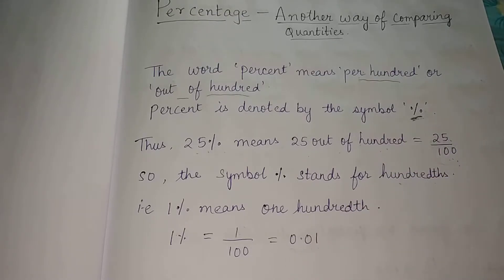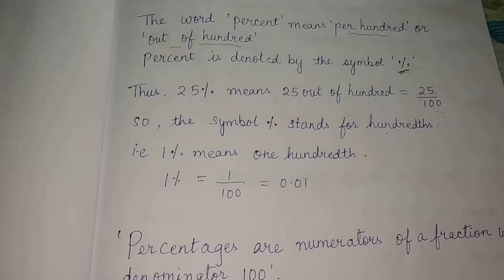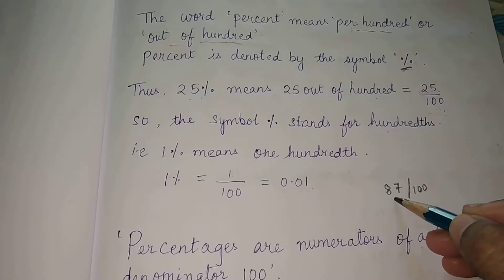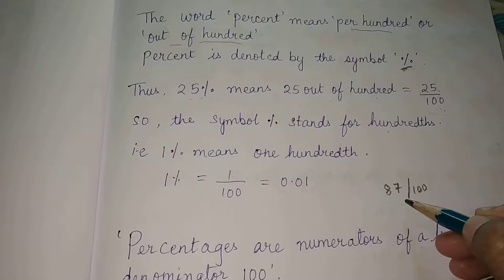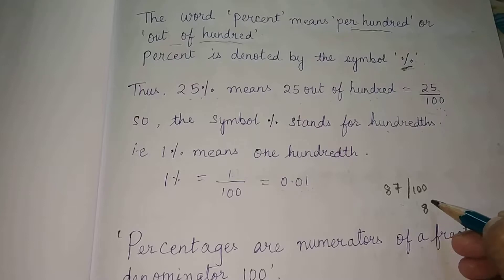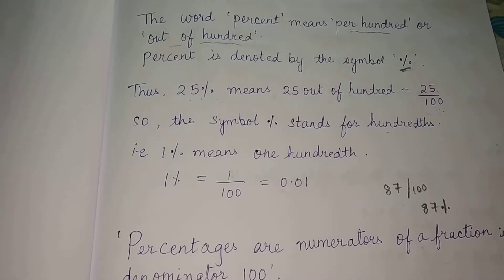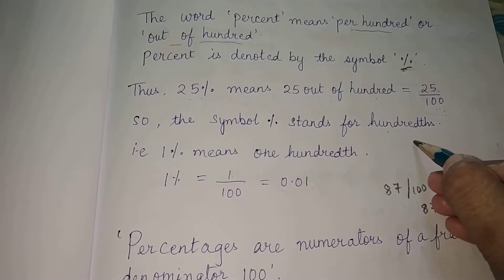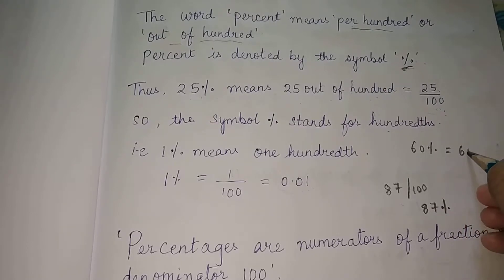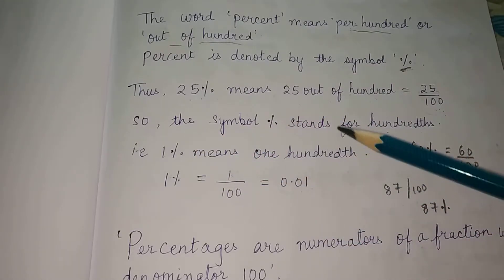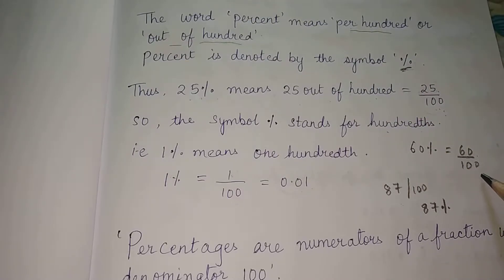If a student got 87 marks out of hundred in maths, what is the percentage of marks? That is 87%. Conversely, 87% means the student has secured 87 marks out of hundred marks. So 25% means 25 out of hundred. 60% means 60 by hundred. Similarly, 70% means 70 by hundred, and 87% means 87 by hundred.